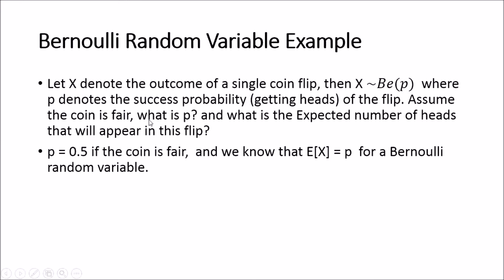So assume the coin is fair, what is p and what is the expected number of heads that will appear in this flip? Well, p is going to be 0.5 or a half because the coin is fair. So each outcome must be equally likely. It's not a weighted coin. And we know that the expected value of X is equal to p for a Bernoulli distributed random variable. So the expected number of heads that we will get in a single flip is a half.